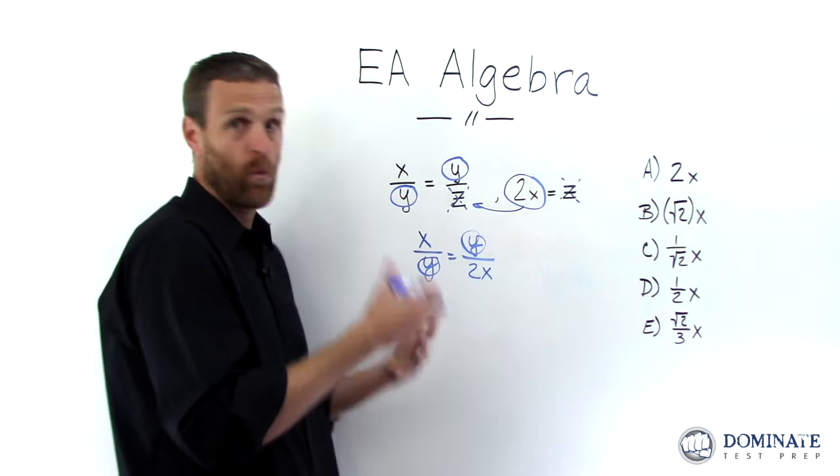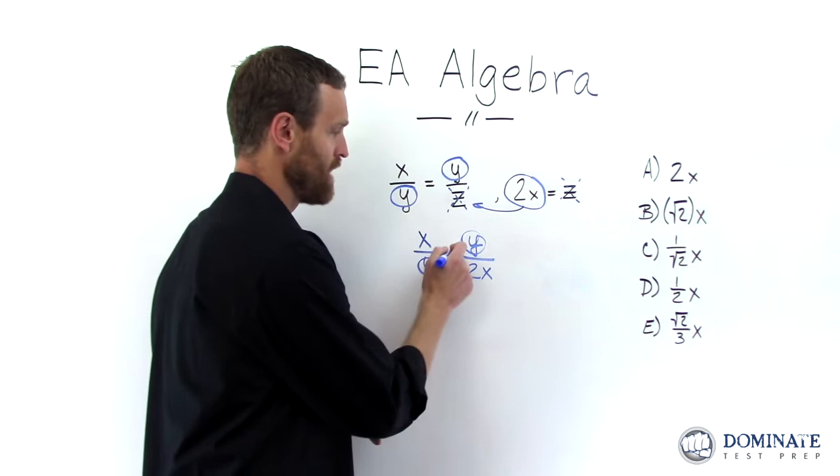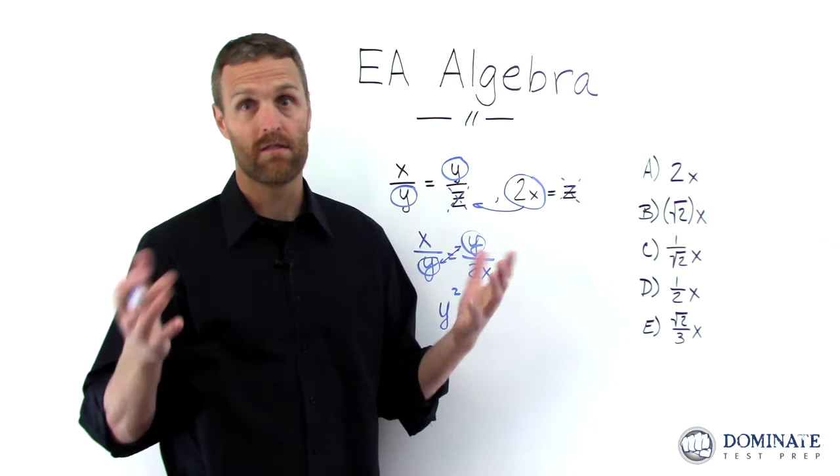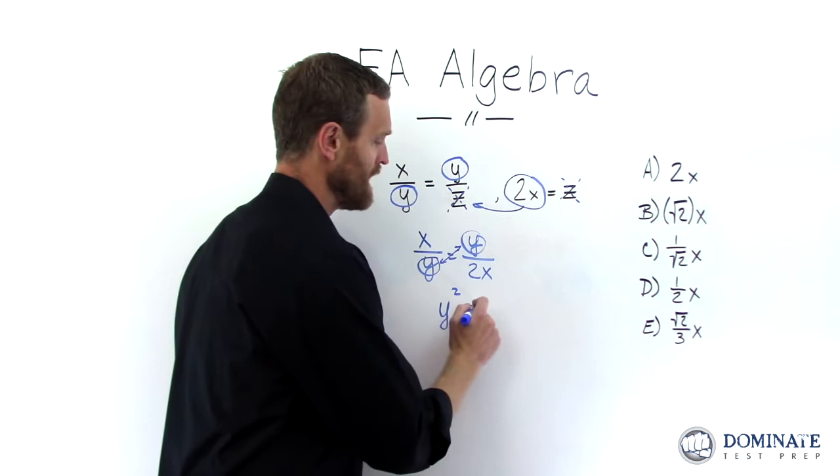Let's isolate Y, and whatever that ends up being, that's what it is, right? So the way we're going to do that is by cross-multiplying. Remember that from high school math? Y times Y is Y squared. Like I said, it's a hard question, right? Now we're dealing with quadratics, square terms, right? So Y squared, it is what it is. And that's going to equal, cross-multiply, X times 2X is 2X squared.